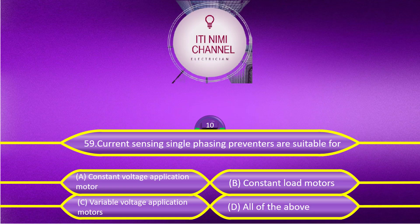Current sensing single-phase preventers are suitable for: Option A, constant voltage application motors. Option B, constant load motors. Option C, variable voltage application motors. Option D, all of the above.